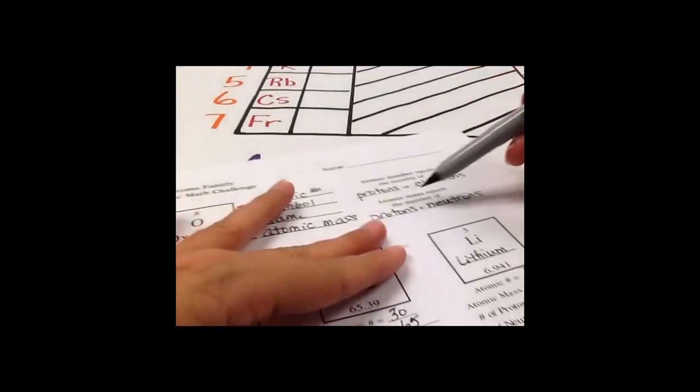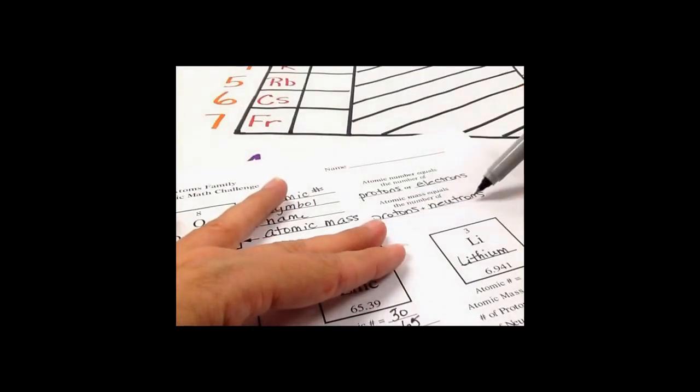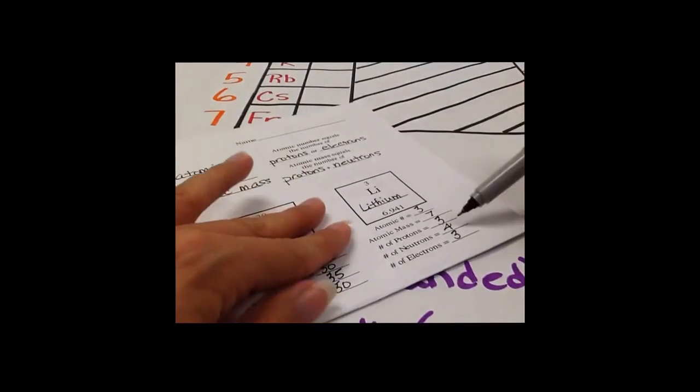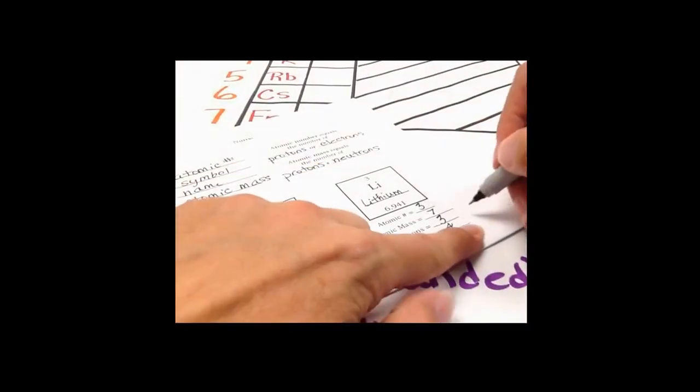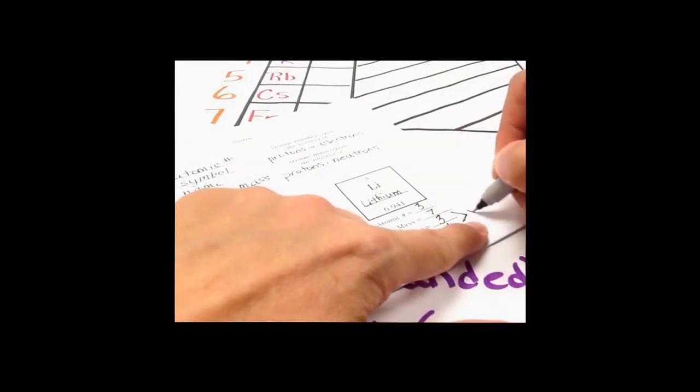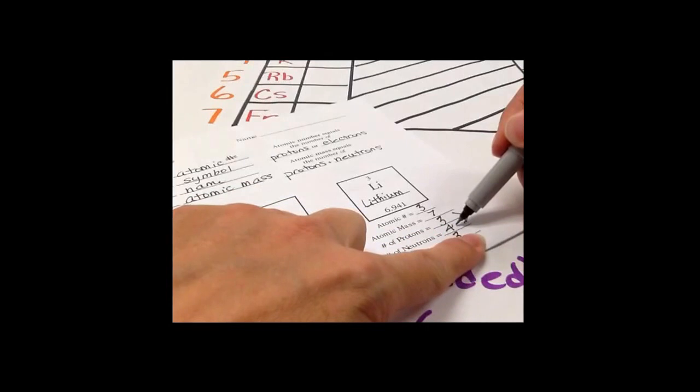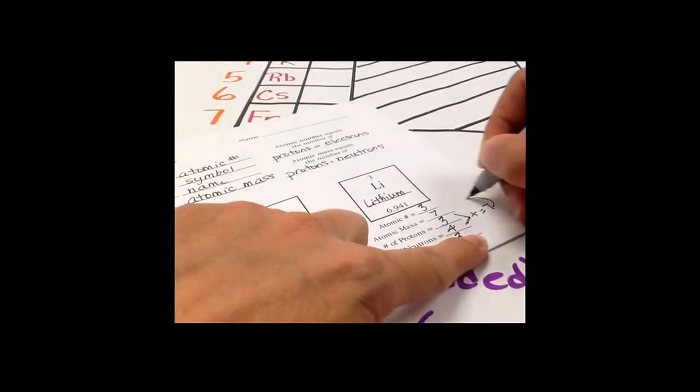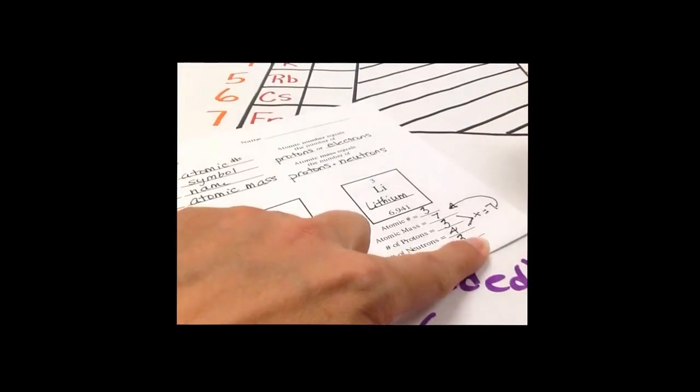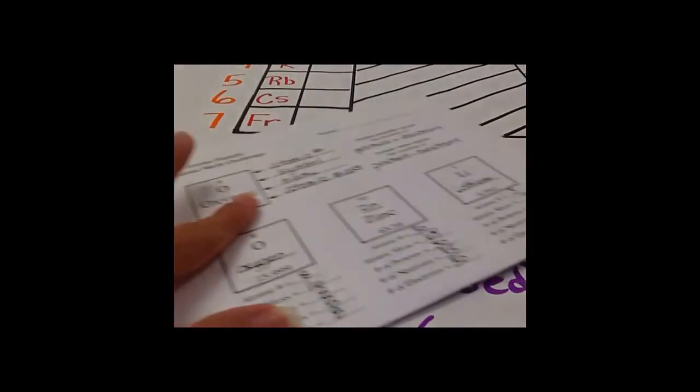You know how I said up here the atomic mass equals the number of protons plus neutrons? Let's see if that's true. Look at lithium. Protons plus neutrons equals how much? 7. Hmm, that's my atomic mass.